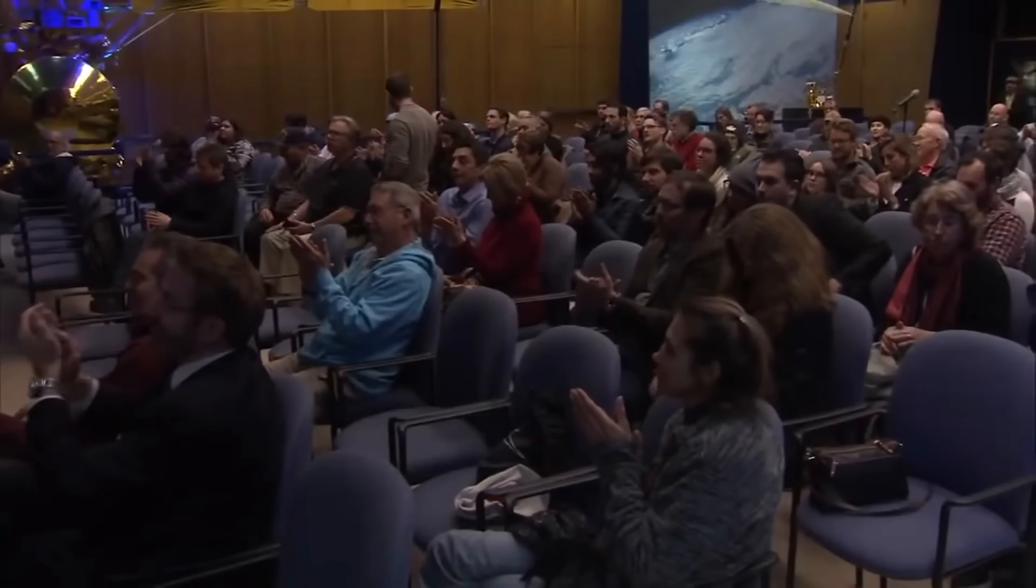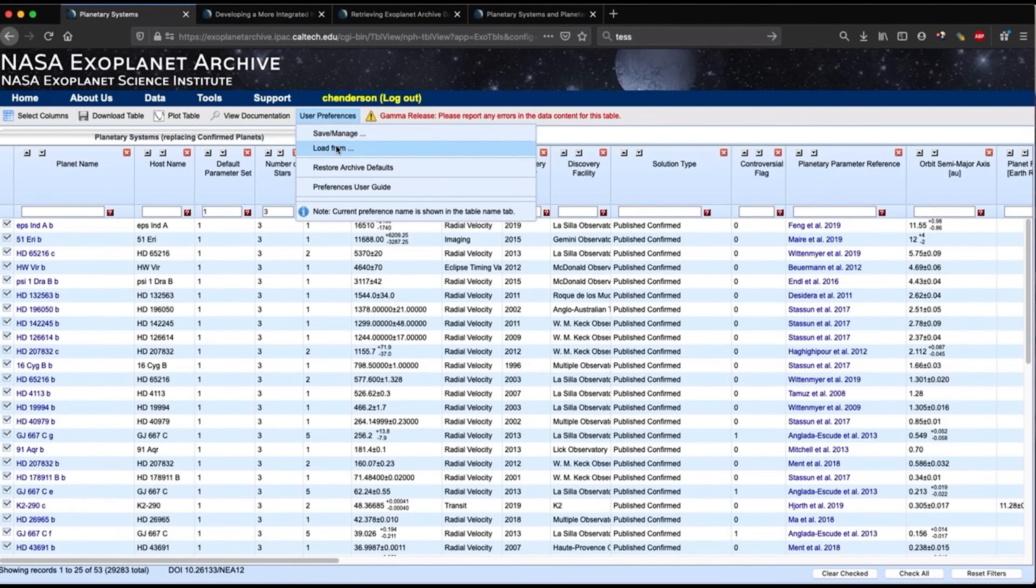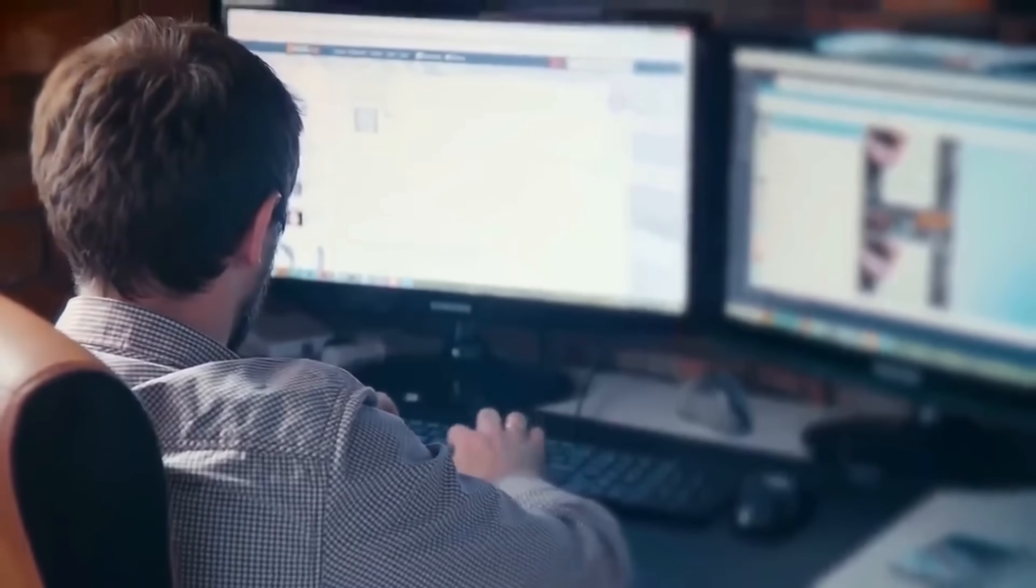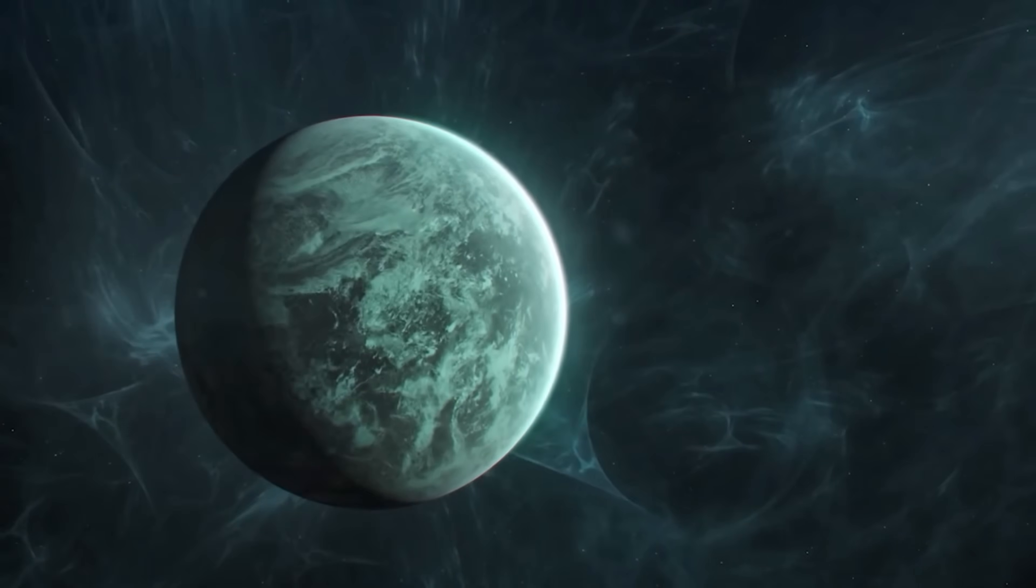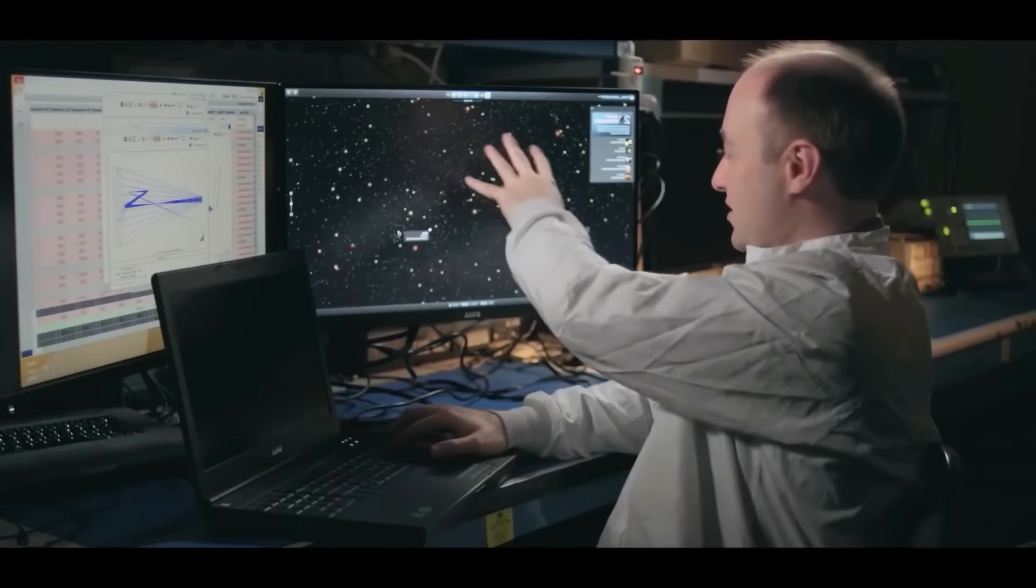The other day, NASA announced that the milestone of 5,000 confirmed exoplanets has been overcome. But it's worth noting that this list is constantly being adjusted. Some candidates are crossed out, and some rejected ones are returned on the contrary. Why is this happening?